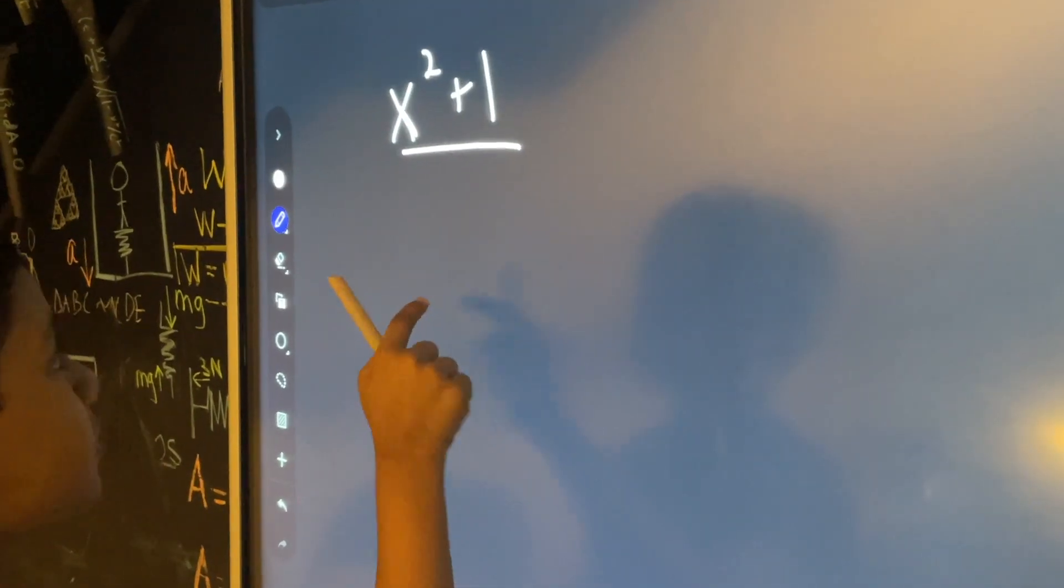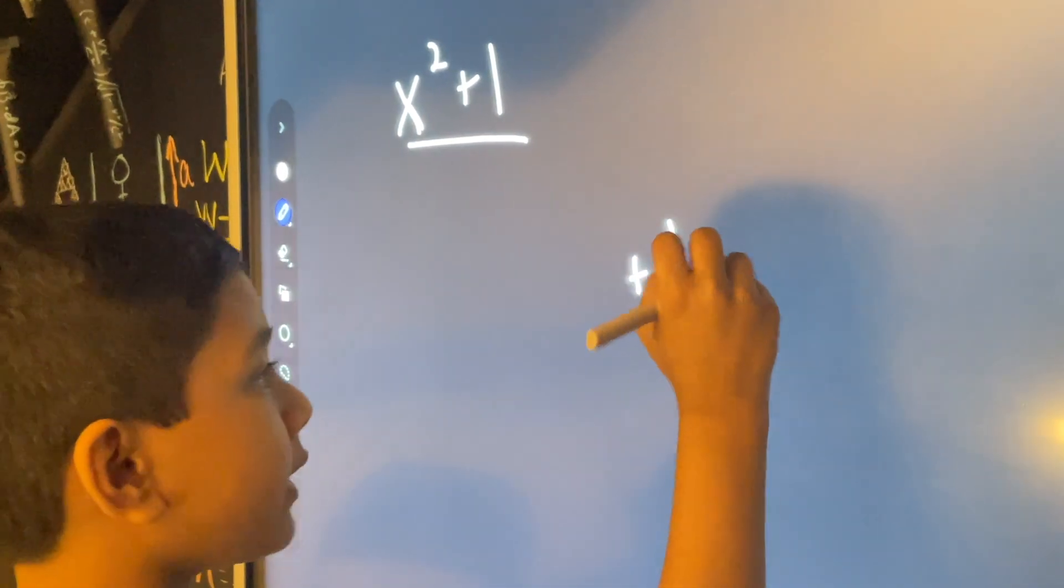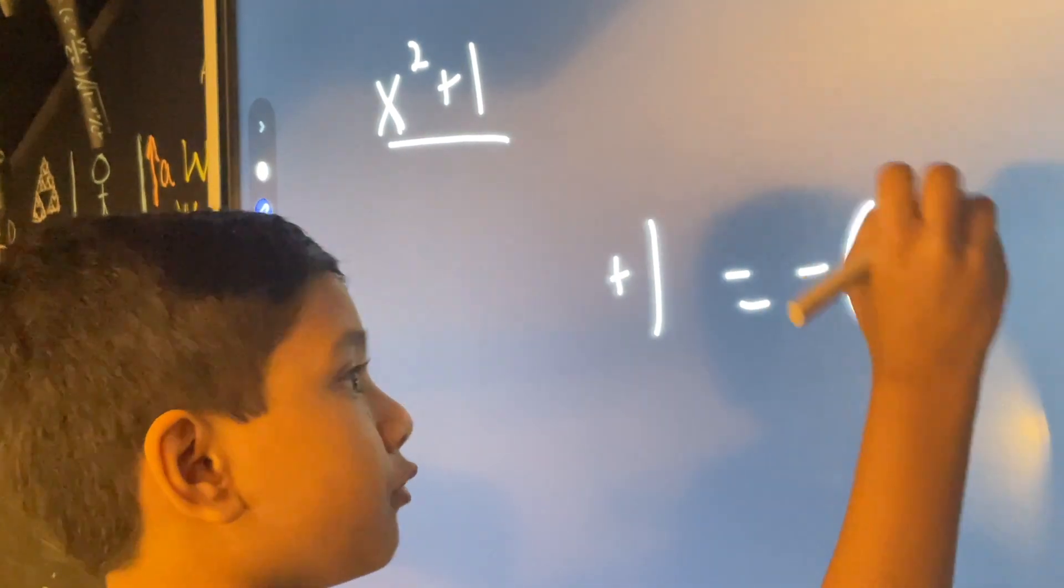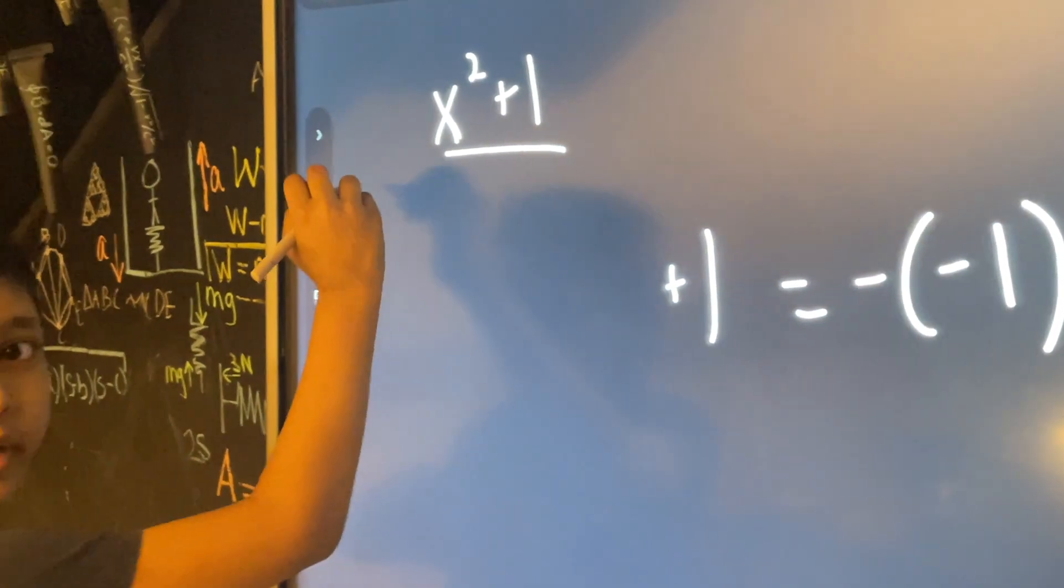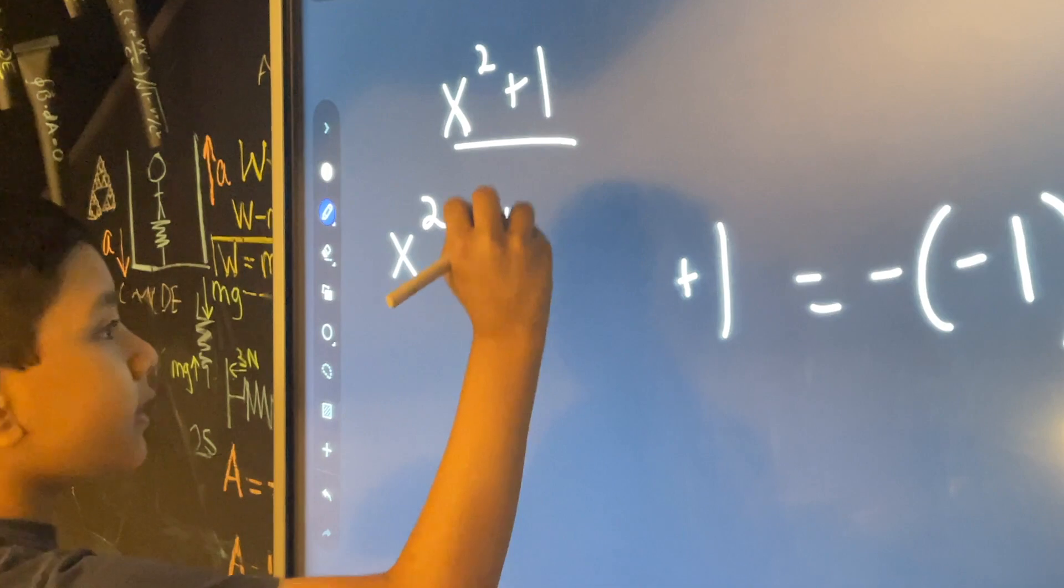Basic pre-algebra tells us that one can be rewritten as minus negative one. So we can rewrite this as x squared minus negative one.